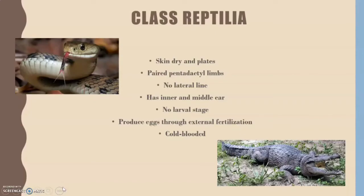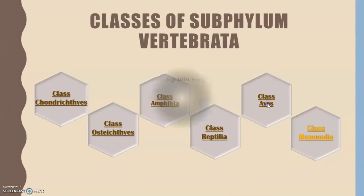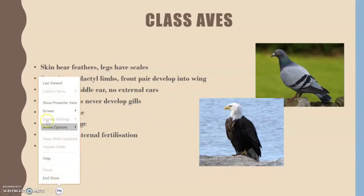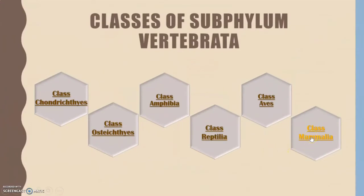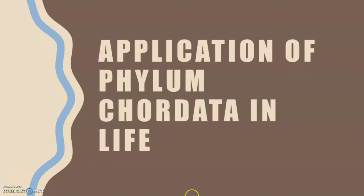For class Aves, the characteristics include skin bearing feathers, legs with scales, paired pentadactyl limbs with the front pair developed into wings, and inner and middle ears with no external ears. Examples include eagles and pigeons. For class Mammalia, the characteristics include skin bearing hairs, two types of glands, paired pentadactyl limbs, and visceral clefts that never develop into gills. Examples include rats and cats.